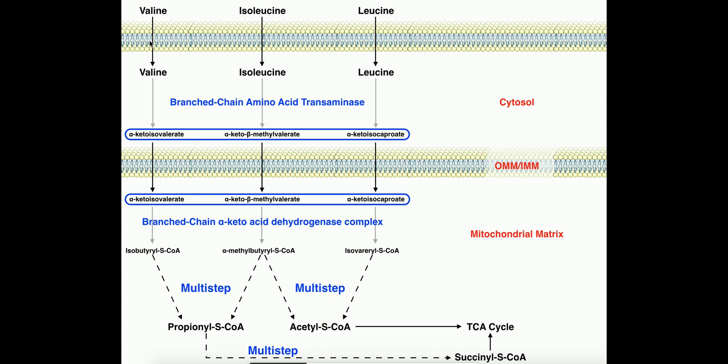Ultimately, valine's catabolism leads to this metabolite, which is called propionyl-CoA. Ultimately, propionyl-CoA, through a multi-step process, I believe it's about four enzymes, gets converted to succinyl-CoA, which hopefully we know can enter the TCA cycle for energy production.